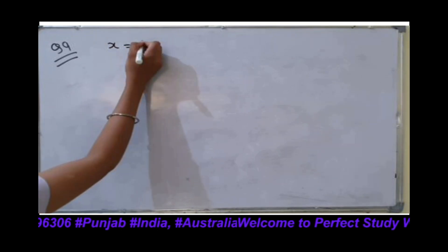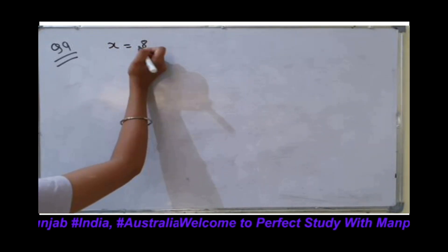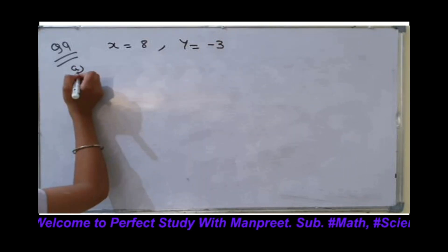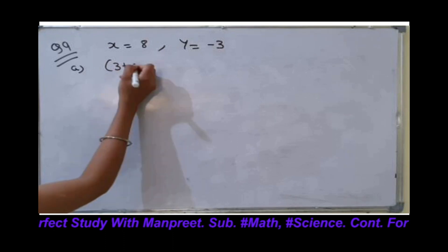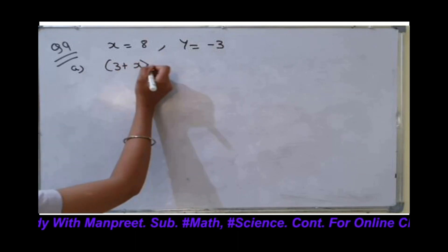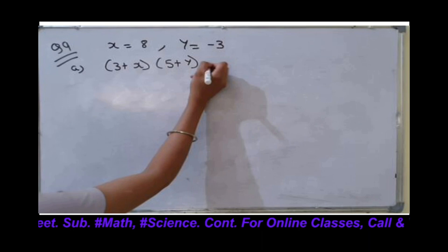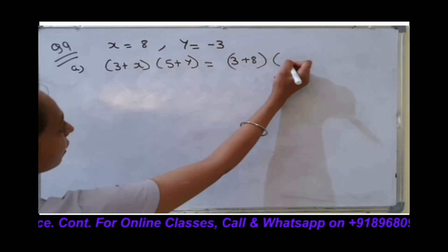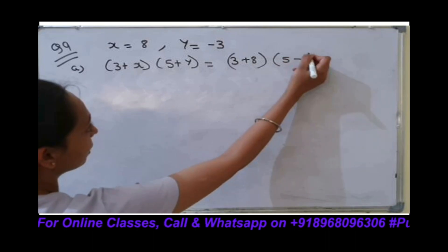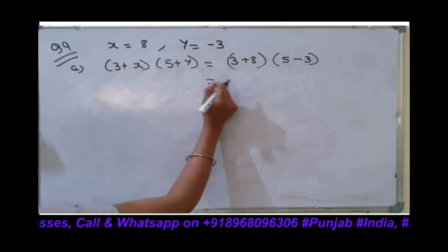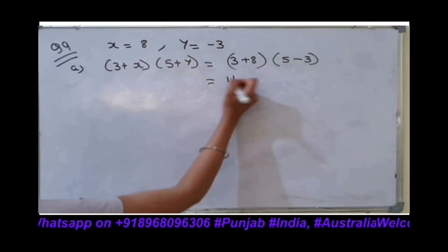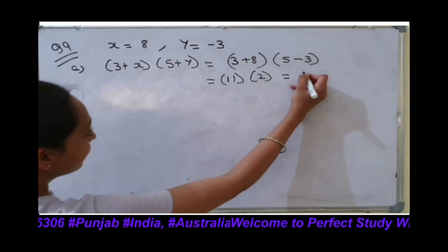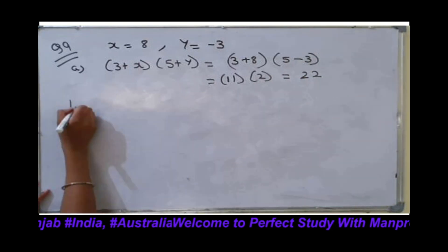Here x is equal to 8 and y is equal to minus 3. Part A is (3 + x)(5 + y). Now we have to put values: it will be (3 + 8)(5 + y minus 3). First we solve the parentheses: 8 plus 3 equals 11, and 5 minus 3 equals 2. It will not be added — the answer is 24.